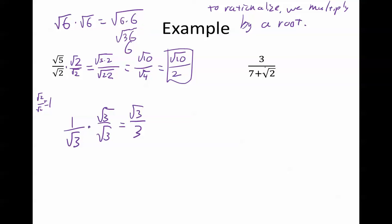This example over here is a little bit different though. Notice that I can't just multiply by root 2. If I did that, this would be root 2 times 7 plus root 2, and that doesn't work, because I'd have to distribute the root 2, and that's 7 root 2 plus 2. Notice that there's still a root there.